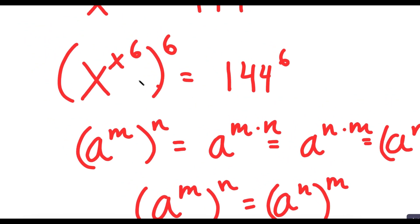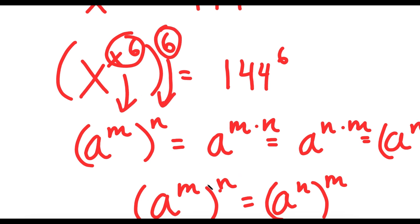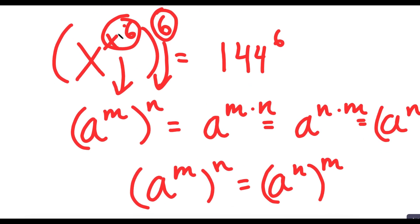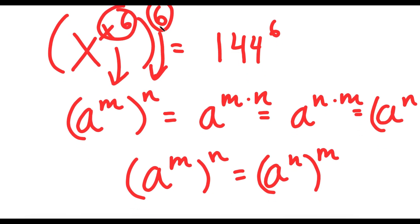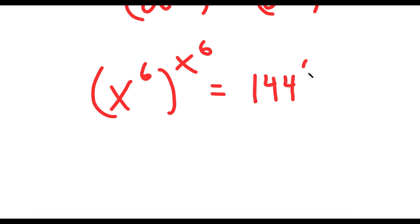So now that we know this, we can think of x to the power of 6 as m and 6 as n. And using this property, I'm going to switch these two places. So now I have x to the power of 6 to the power of x to the power of 6 is equal to 144 to the power of 6.